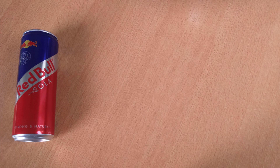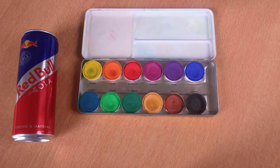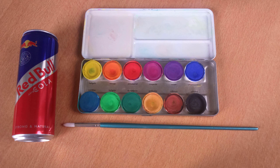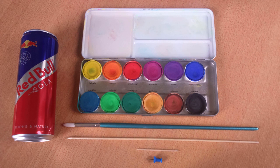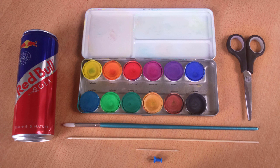So what you're gonna need for this project is any soda can, some watercolors, a paintbrush, a toothpick or a bamboo skewer, a map tag if you want to scratch finer lines, and a pair of scissors that you don't mind getting dull.